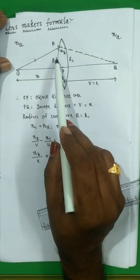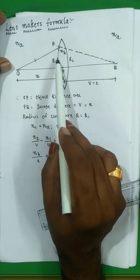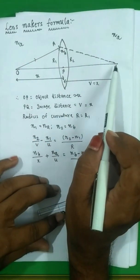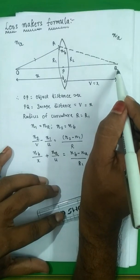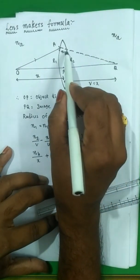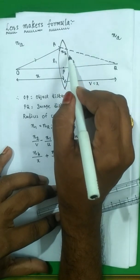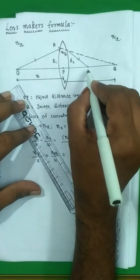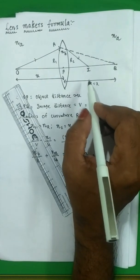Equation one applies for only a convex surface. Since the ray is also refracted at the second surface, which is concave, wherever we observe the image for this second curved surface it acts as an object. The ray comes along this direction, refracts at the interface, and the extended refracted ray gives the image at point I. For the second curved surface this image distance is v.